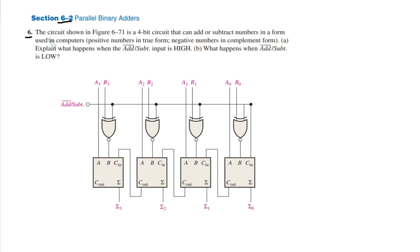The statement of question 6 is: the circuit shown in figure 6.71 is a 4-bit circuit that can add or subtract numbers in a form used in computers — positive numbers in true form and negative numbers in complemented form. It basically adds two 4-bit numbers or subtracts them based on a control bit: if that bit is 0 it will add, and if it is 1 it will subtract. So it can function as either a subtractor or adder.